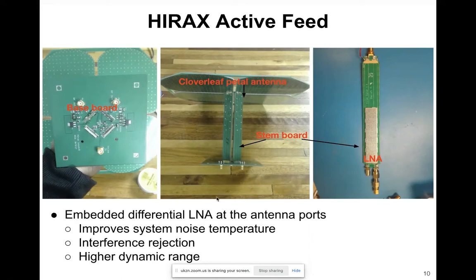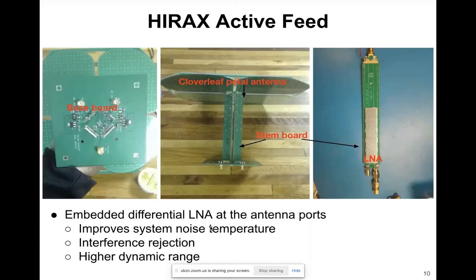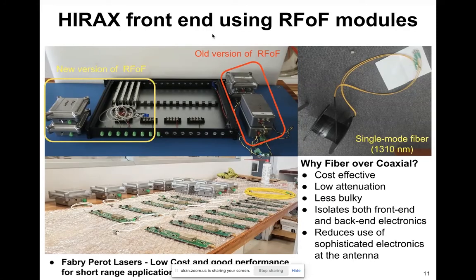Our LNA is a differential amplifier integrated into the antenna. The reason for doing this is that it improves our system noise temperature, provides dynamic range, and differential LNA configurations offer interference rejection. This is the IRAQS front-end electronics using the RFoF fiber modules.